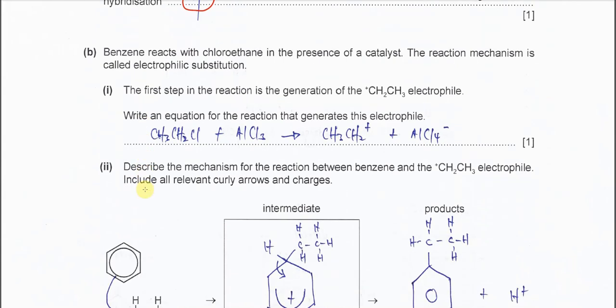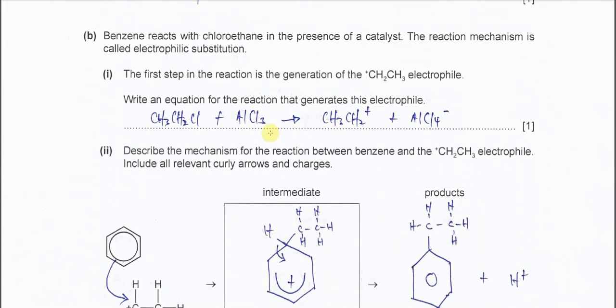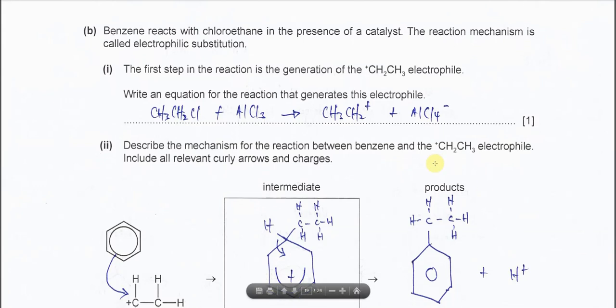Part B. Benzene reacts with chloroethane in the presence of a catalyst. The reaction mechanism is called electrophilic substitution.